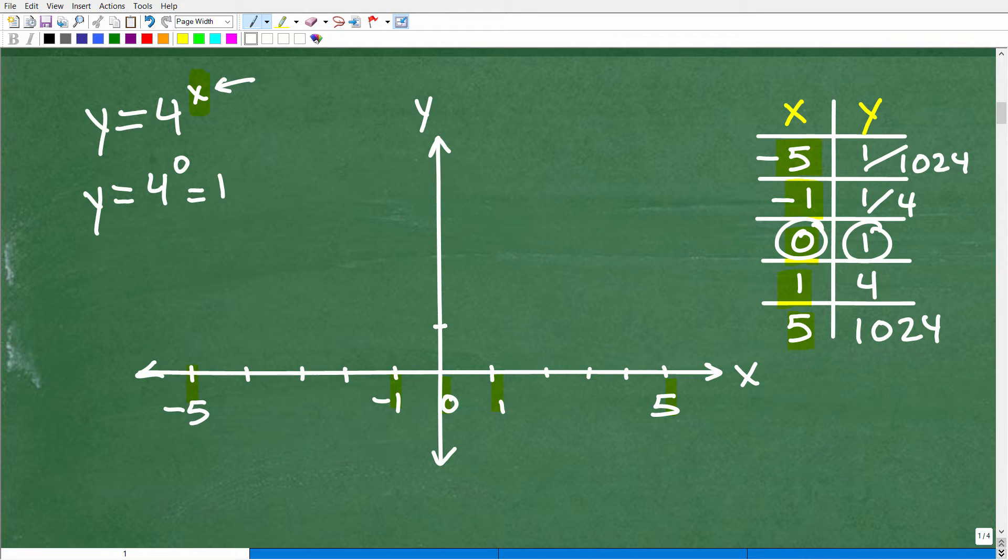So when x is 0, y is 1. So this corresponds to the point (0, 1). That's on our graph. So that would be right here. There is 0, 1. So let's plug in that little point right there.